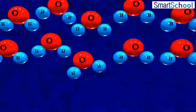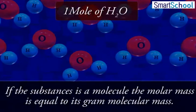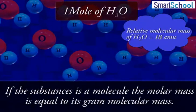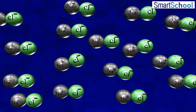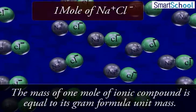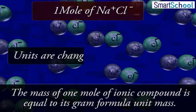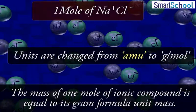If the substance is a molecule, the molar mass is equal to its gram molecular mass. The mass of one mole of an ionic compound is numerically equal to the molecular mass, but units have to be changed from AMU to grams.